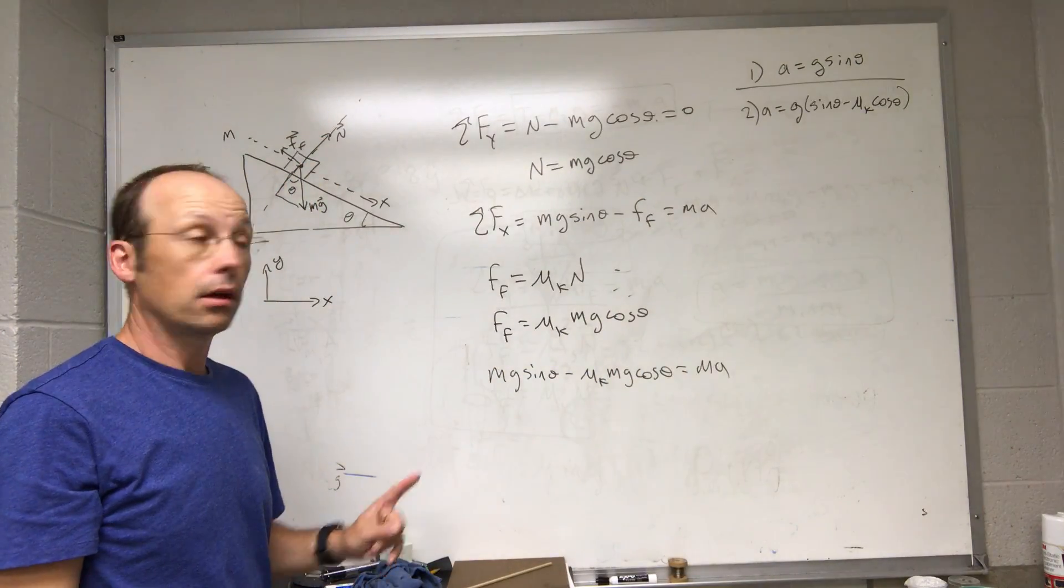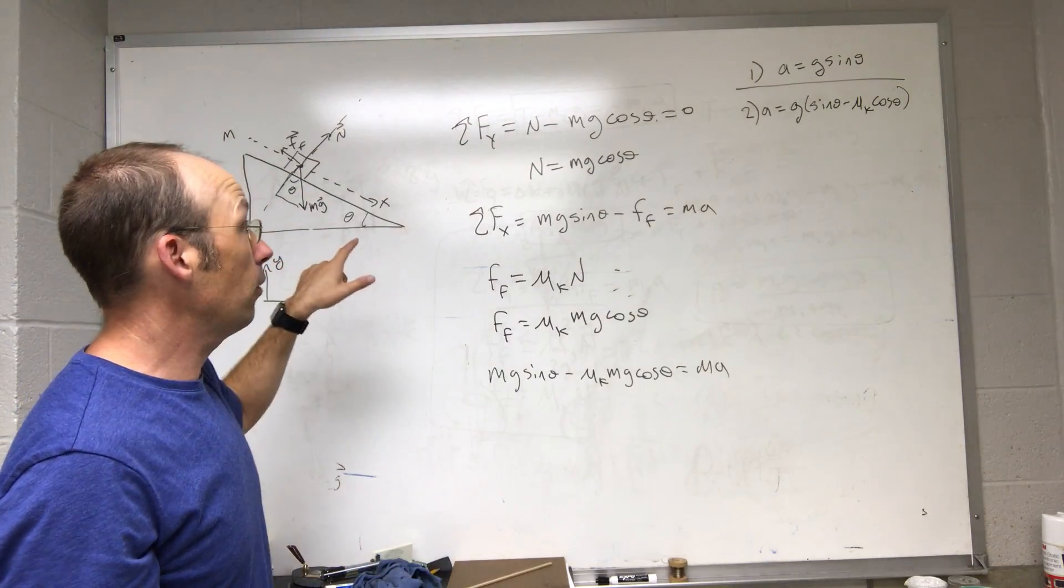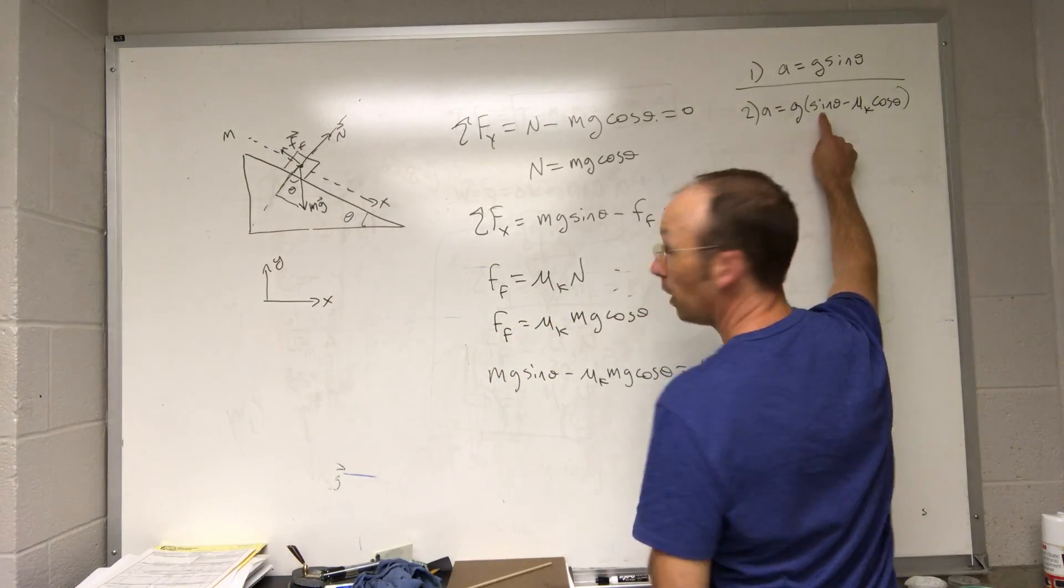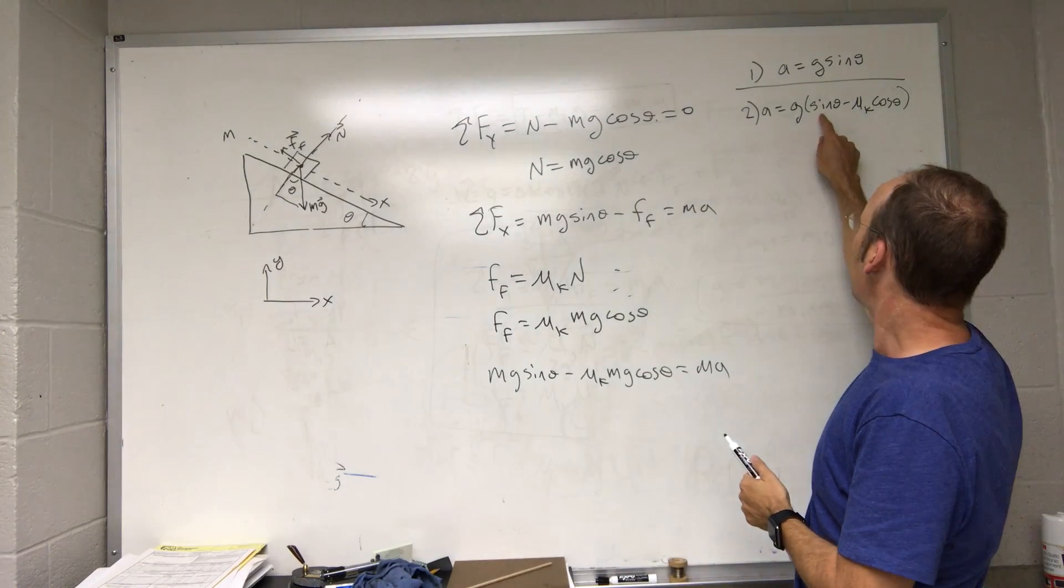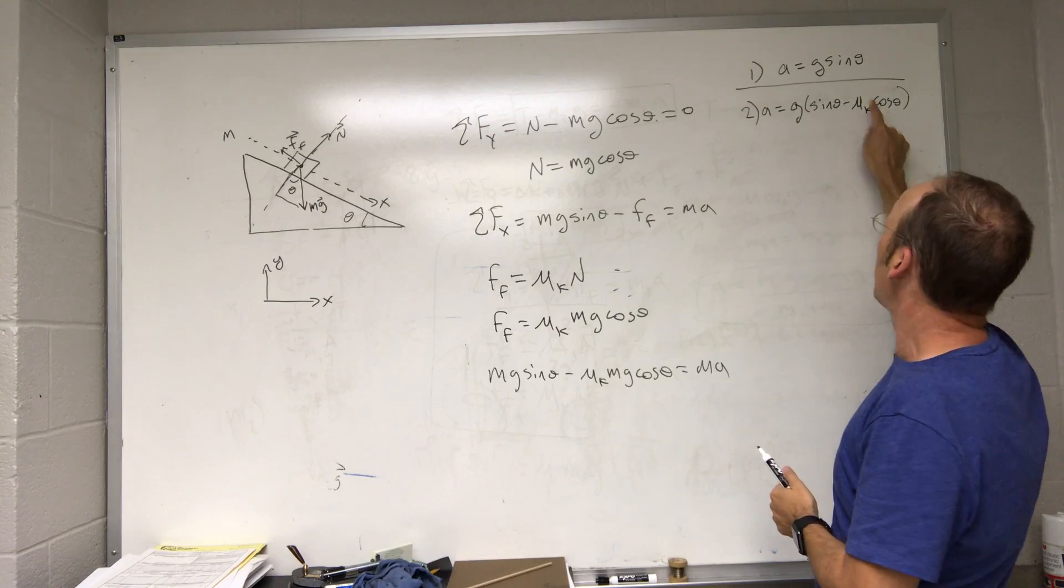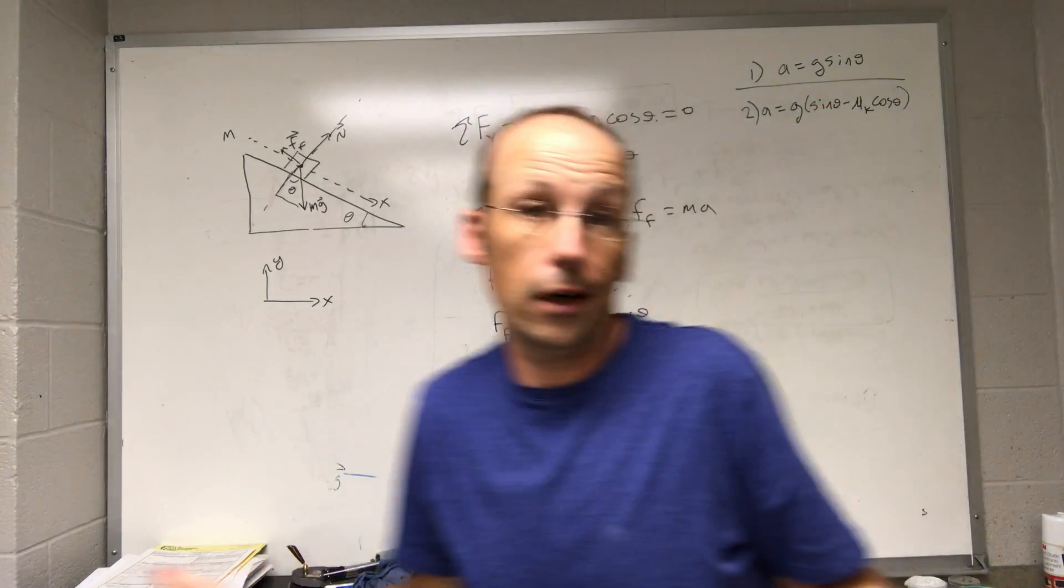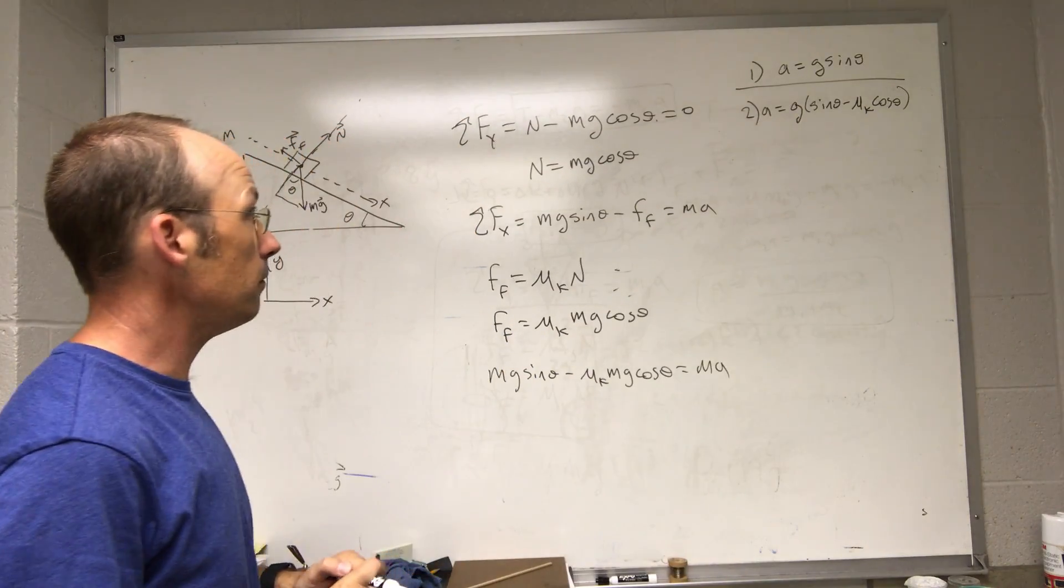g times sine theta minus mu k cosine theta. Which one's greater? Does it have a greater acceleration with or without friction? Well, if the angle is less than 90 degrees, this is going to be a positive value. I'm going to subtract off that positive value from my sine theta. So sine theta minus this thing is going to be smaller than sine theta. So this is going to be a smaller acceleration than that. That's what we thought, right? Okay. That was number two.